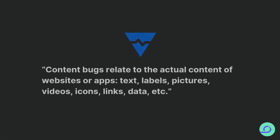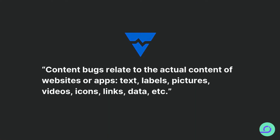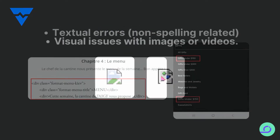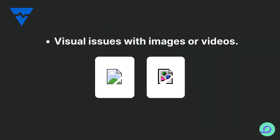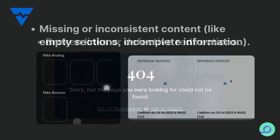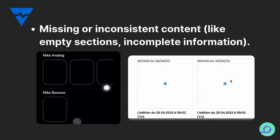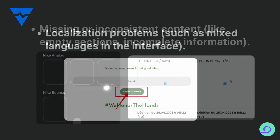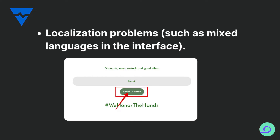Content bugs are discrepancies or errors in the visible elements of a digital product. These include, but are not limited to: textual errors (non-spelling related), visual issues with images or videos, broken links or defective redirections, missing or inconsistent content like empty sections or incomplete information, and localization problems such as mixed languages in the interface.